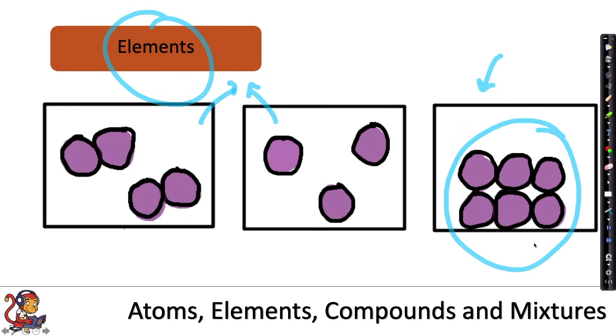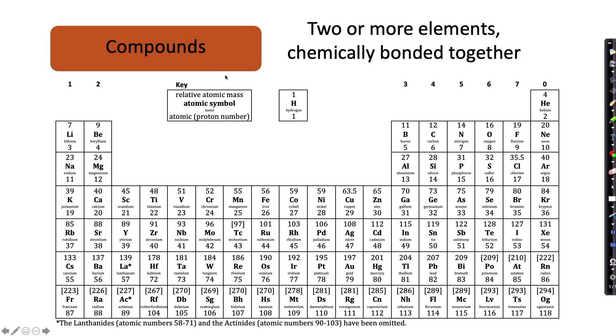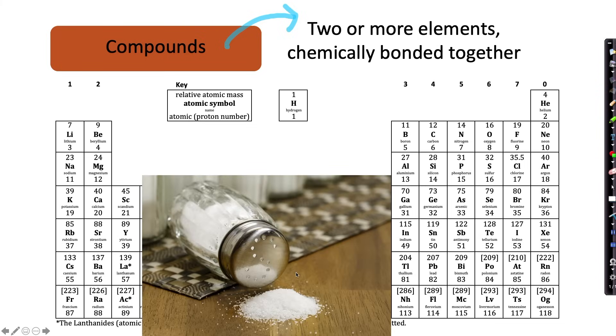Moving on to compounds, the definition for a compound is two or more elements chemically bonded together. So there are different ways that these elements can combine to make a compound. One example is the compound sodium chloride, which is the chemical name for salt. Sodium chloride is made up of sodium and chlorine chemically bonded together. So this time it's not just one element, it's two different elements chemically bonded together.